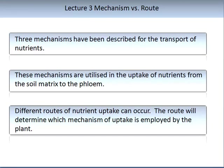To date in this lecture we have learnt about the three mechanisms used for the transport of nutrients. These mechanisms are utilised in the uptake of nutrients from the soil matrix and are involved in various components along the route to the phloem. Different routes of nutrient uptake can occur, as described for water uptake. The route will determine which mechanism of uptake is employed by the plant. The chemical, physical and energy requirements are also drivers of both the route and the mechanism employed.